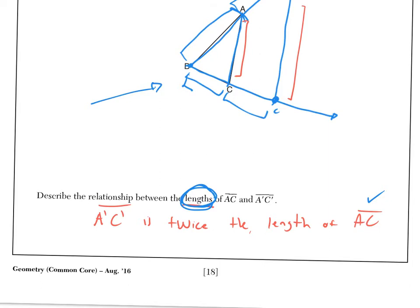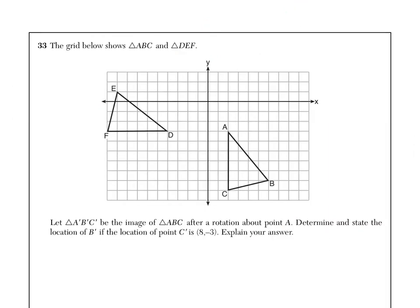Alright, this is a tricky question. Let A'B'C' be the image of ABC after a rotation around point A. Determine and state the location of B' if the location of point C' is (8, -3). Explain your answer. So it tells us that C' is at (8, -3), which is right here, so we know this triangle rotated up like this. Some of you who went to regions prep know this: you can take another piece of paper and all you do is actually trace ABC, and actually you can rotate this triangle using a piece of paper until C matches onto C'. And if you do it that way, when you actually rotate the paper, you'd find out that B' ends up right over here.